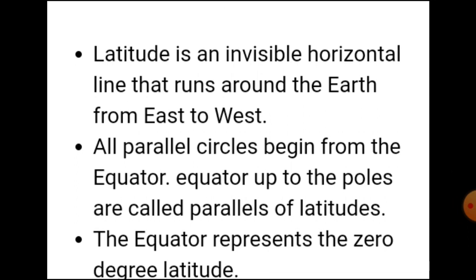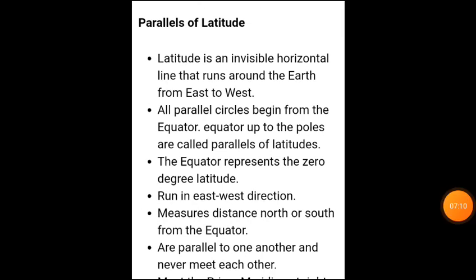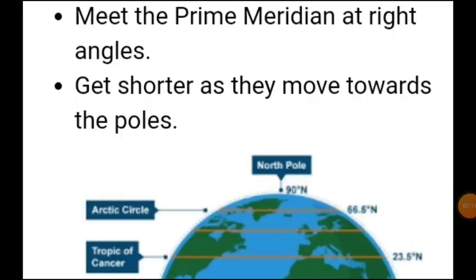All parallel lines from the equator up to the poles are called parallels of latitudes. The equator represents zero degree. These lines run in the east-west direction and measure distance north or south from the equator. These latitudes meet the Prime Meridian at right angles and get shorter as they move towards the poles.